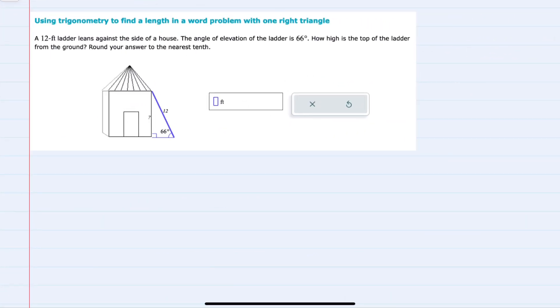In this example we're told there's a 12 foot ladder leaning against the side of a house. Here's our 12 foot ladder. The angle of elevation of the ladder is 66 degrees. So 66 degrees is the angle that the ladder makes with the ground. And we're asked to find how high is the top of the ladder from the ground.